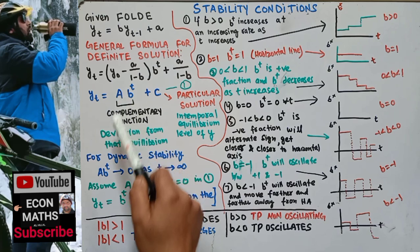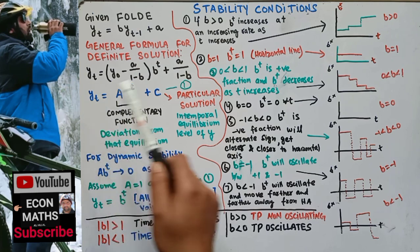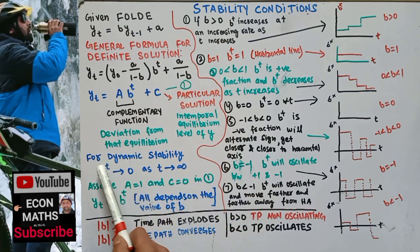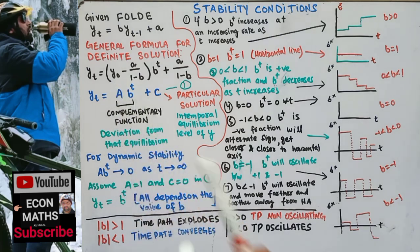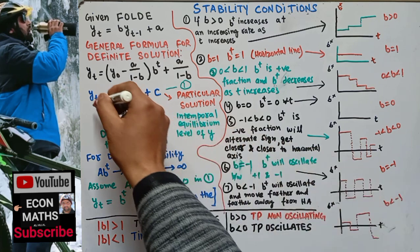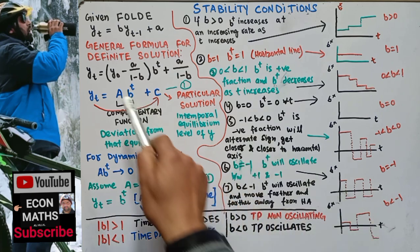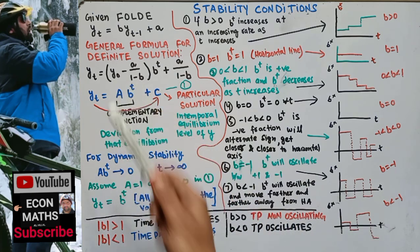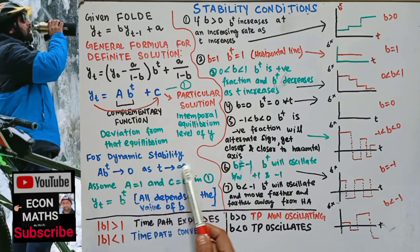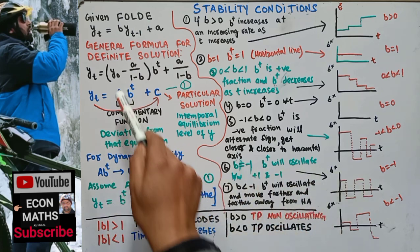The second term denotes the deviation from equilibrium. This time path will be dynamically stable if the first term on the right-hand side converges to 0 as t tends to infinity. That means y_t will approach the particular solution only when this term equals 0. If it does not converge toward 0, the time path will be dynamically unstable.